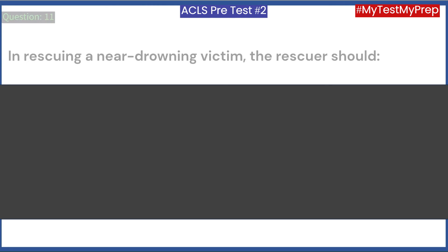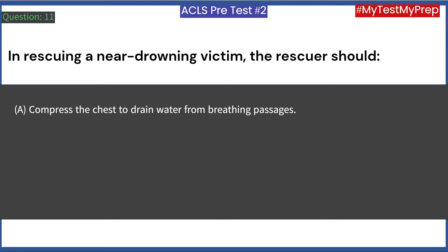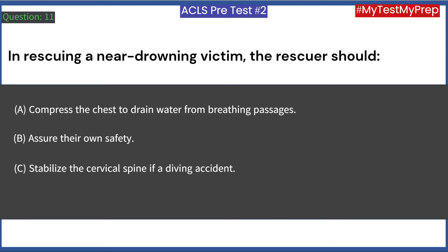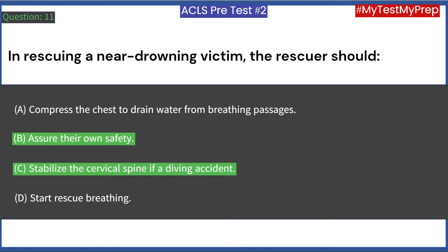In rescuing a near-drowning victim, the rescuer should: A. Compress the chest to drain water from breathing passages. B. Assure their own safety. C. Stabilize the cervical spine if a diving accident. D. Start rescue breathing. Answer: B, C, D.